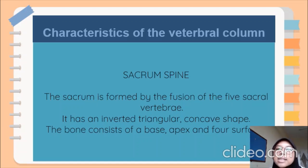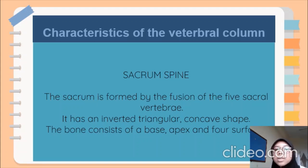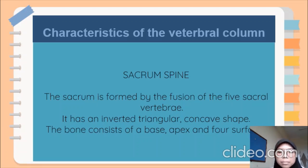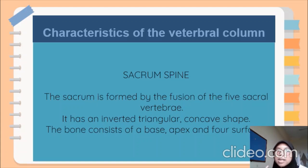The second characteristic is that the sacrum has an inverted triangular and concave shape. The sacrum is shovel-shaped with the apex pointed inferiorly and anteriorly. The third characteristic is that the bone consists of a base, apex, and four surfaces. Posterior to the body of the first sacral segment is the opening to the sacral canal, which is the continuation of the vertebral canal and contains certain sacral nerves. The median sacral crest is formed by the fused spinous processes of the sacral vertebrae.